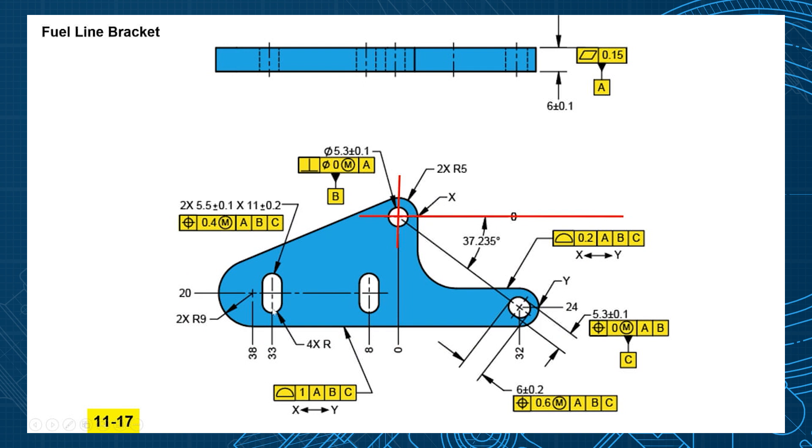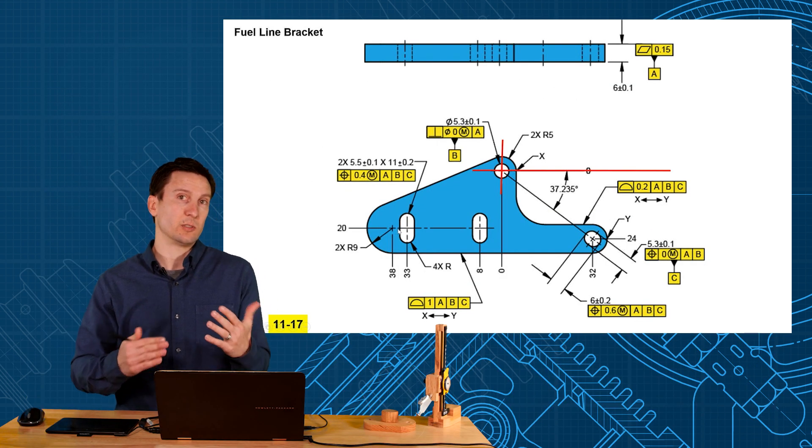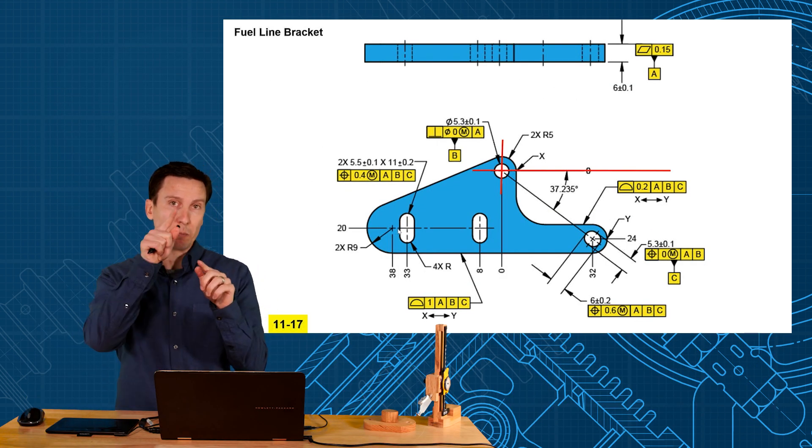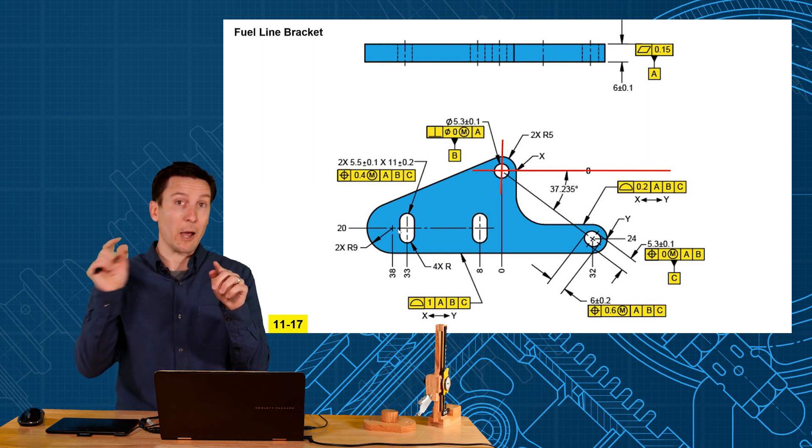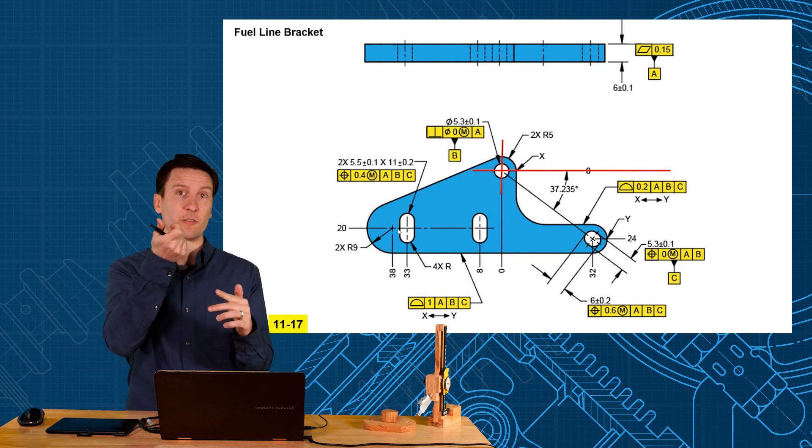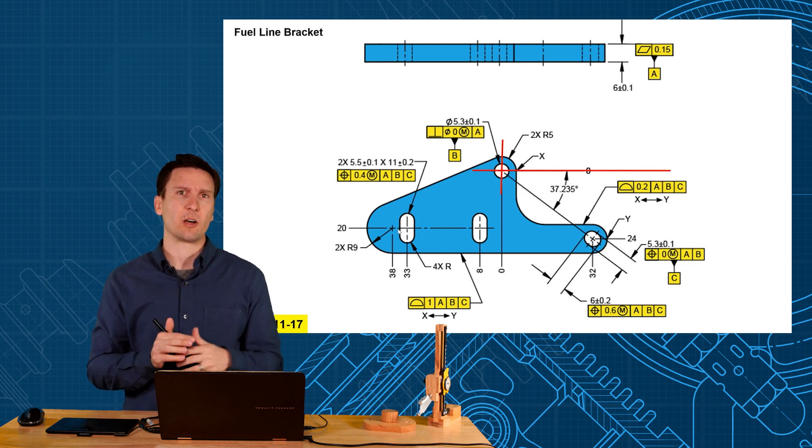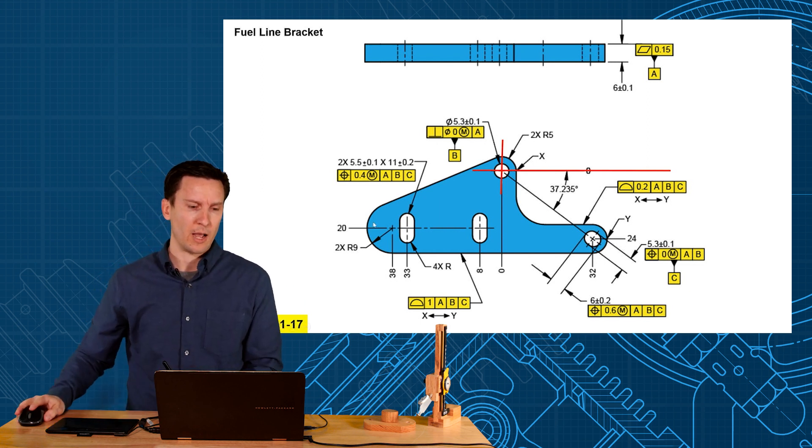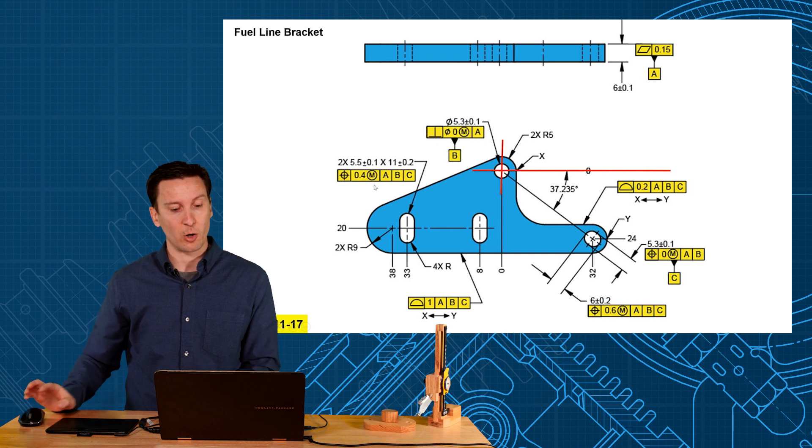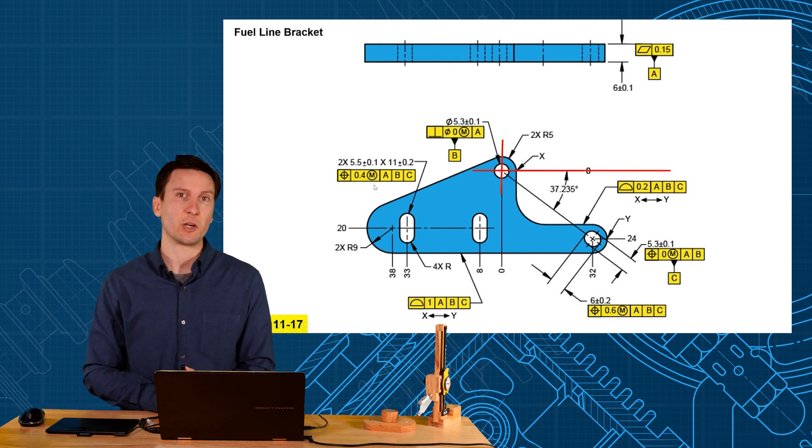And then these holes over here, they're spec'd out two times, 5.5 plus or minus 0.1 by 11 plus or minus 0.2. And those have a position of 0.4 at MMC. So the big concepts that we do is set up your datum reference frame, we profile the critical surfaces, and we also profile the non-critical surfaces. We just give smaller tolerances for the things we care about and bigger tolerances for the things we don't care about. And then we use position tolerances for controlling holes and slots and features of size.